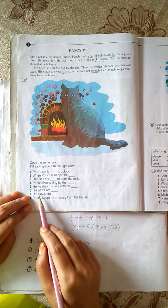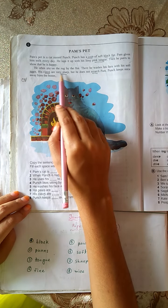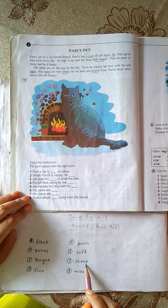7. His claws are sharp. His claws are very sharp. Answer will be sharp.